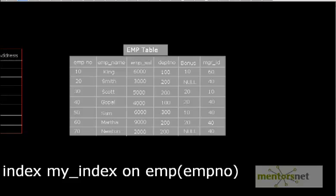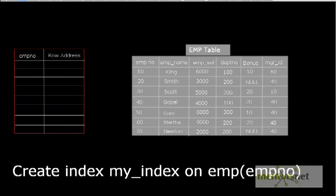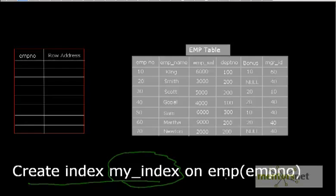To create an index, we use a single command: CREATE INDEX. The syntax is: CREATE INDEX index_name ON table_name (column_name). So I am going to explain exactly what is happening internally when you execute this command.